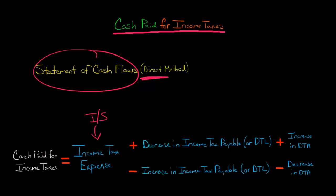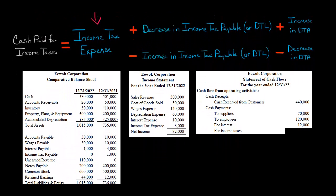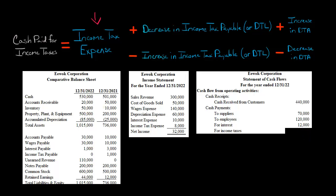Let me give you a simple example where we'll just focus on the basic parts for this sample problem I've been working on in prior videos for the direct method. We've got our comparative balance sheet, we've got an income statement, and we've been working on the operating section for a statement of cash flows. Now we need to know the cash payment for income taxes. We follow our formula and start with income tax expense — from the income statement, we have income tax expense of $8,000.